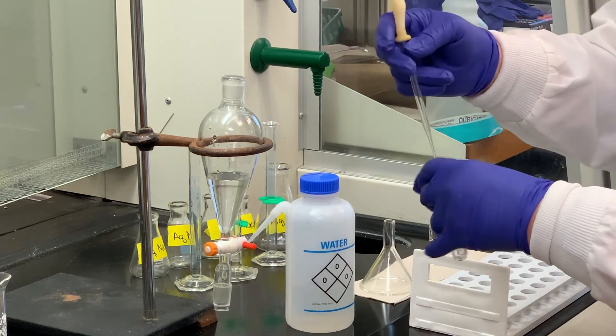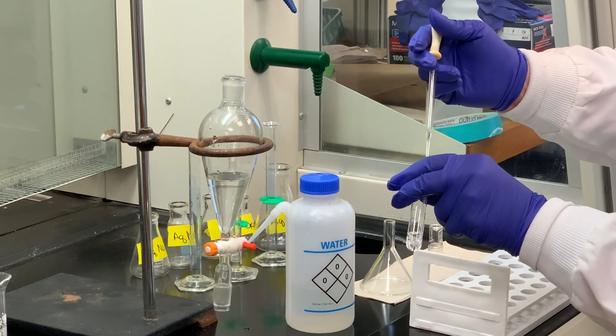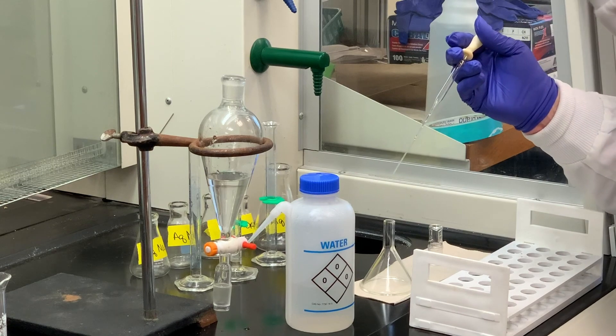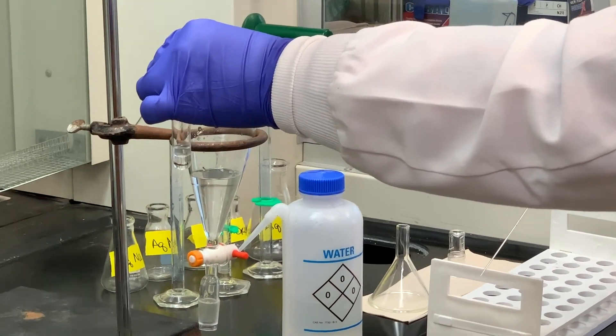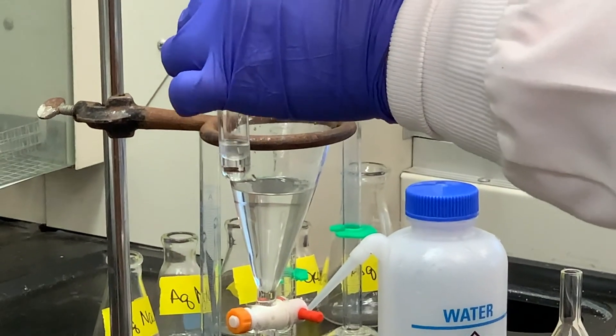And if I see two layers, then that means the top layer cannot be the aqueous, it must be the organic, and you can see that there are two layers. So what does that tell me? That tells me that the top layer is the organic.